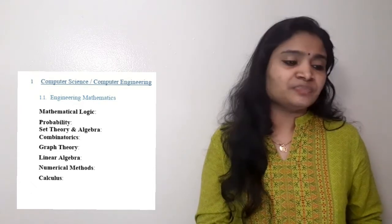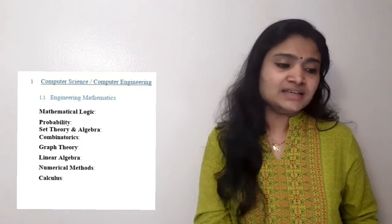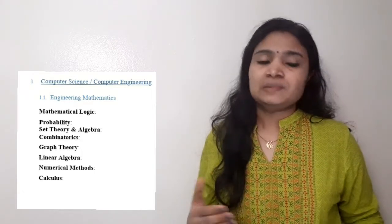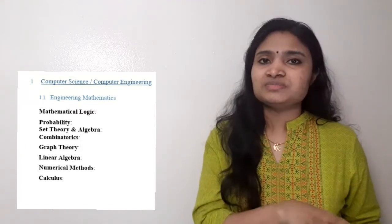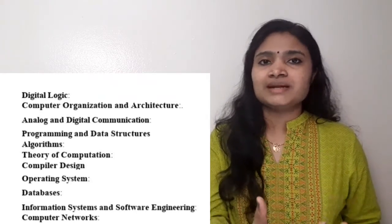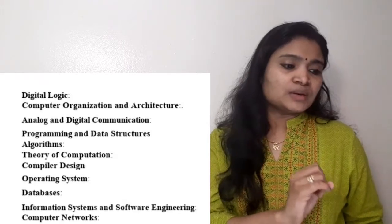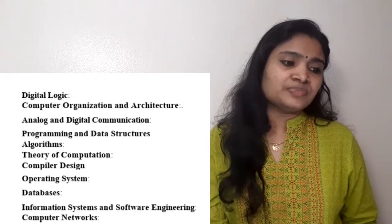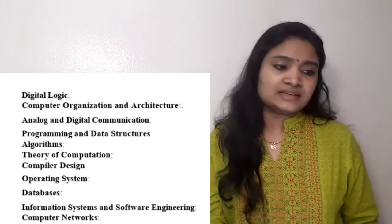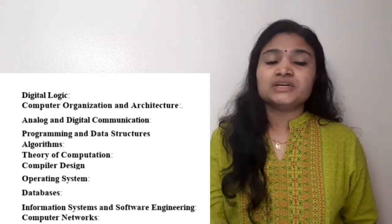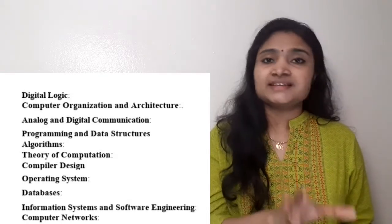For the Computer Science branch, from Engineering Maths you have to study: Mathematical Logic, Probability, Set Theory and Algebra, Permutation and Combination, Graph Theory, Linear Algebra, Numerical Methods, and Calculus - these topics are common for all three branches. The additional CS-specific subjects are: Digital Logic, Computer Organization and Architecture (COA), Analog and Digital Communication, Programming and Data Structures, Algorithms, Theory of Computation, Compiler Design, Operating Systems, Databases and Information Systems, Software Engineering, and Computer Networks.